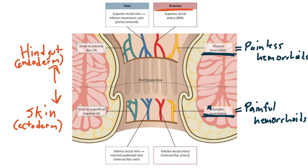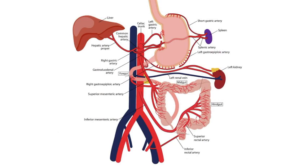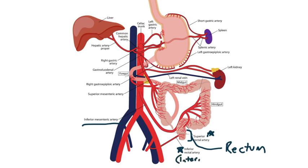Next, let's focus on the arteries. Blood above the line comes from the superior rectal artery, which is a branch of the inferior mesenteric artery. Looking at the image, above the pectinate line you can see the superior rectal artery, a branch of the IMA. Below the line, you can see the inferior rectal artery, which is a branch of the internal pudendal artery, which is itself a branch of the internal iliac artery.